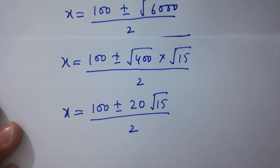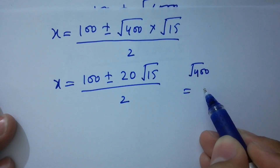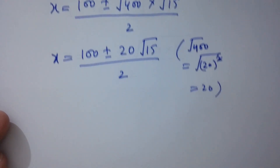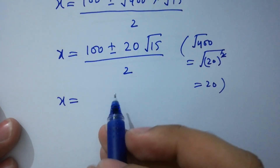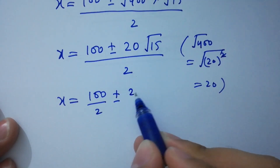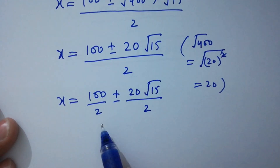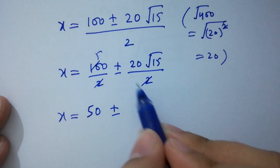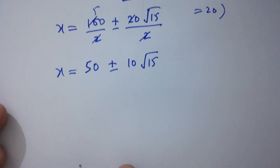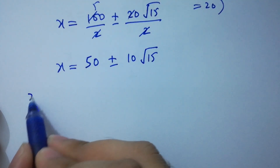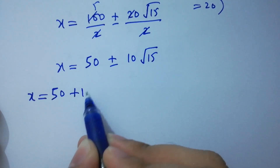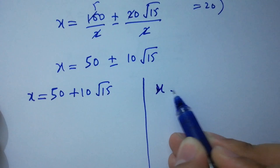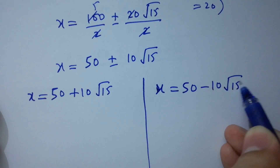Since square root of 400 is 20, we have x equals 100 plus or minus 20 times square root of 15 over 2. Separating the fractions: x equals 50 plus or minus 10 times square root of 15. So x equals 50 plus 10 root 15, or x equals 50 minus 10 root 15.